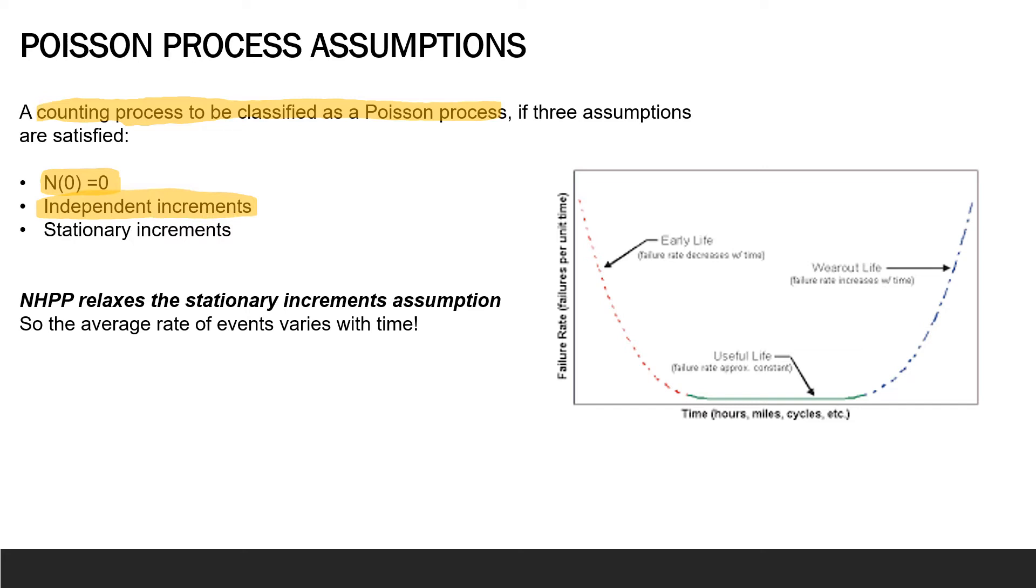This third assumption about stationary increments is something that is relaxed by the non-homogeneous Poisson process. Recall that stationary increments means that the distribution of the number of events in an interval depends only on the length of the time interval. So increments on equally long time intervals are identically distributed.